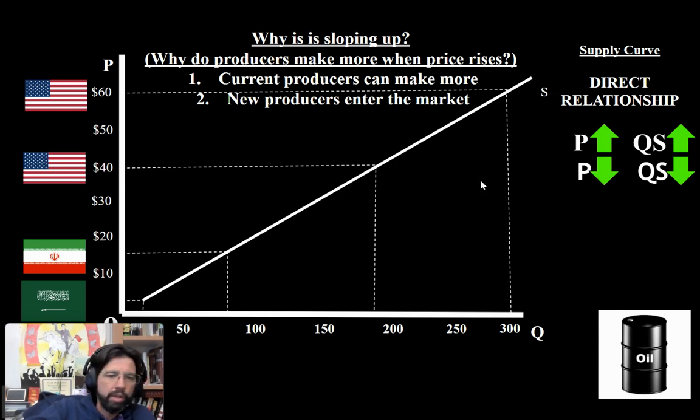And remember, since this is a change in price, just like when we dealt with the law of demand, the law of supply is a change in price only, and it's movement on the curve. Notice you don't see this curve movement anywhere. We just are on the curve going up and down. So law of supply, movement on the curve, because when it's only a change in price it stays on the curve.